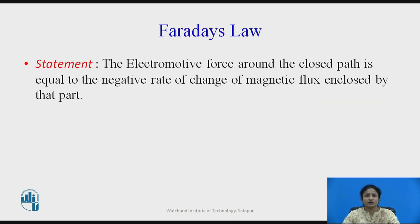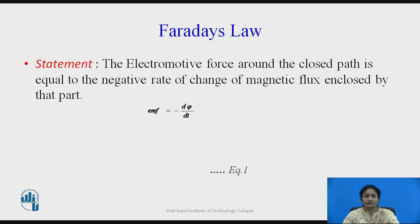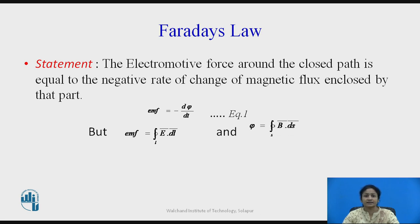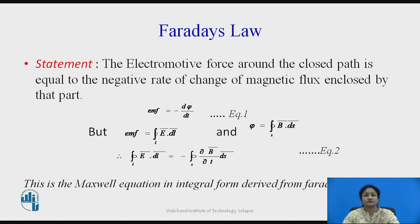Faraday's law states that the electromotive force around the closed path is equal to the negative rate of change of magnetic flux enclosed by that path. Here, EMF is the electric field across the length, and magnetic flux is the magnetic flux density across the surface. When we substitute these two terms into equation 1, we get equation 2, which is Maxwell's equation in integral form derived from Faraday's law.